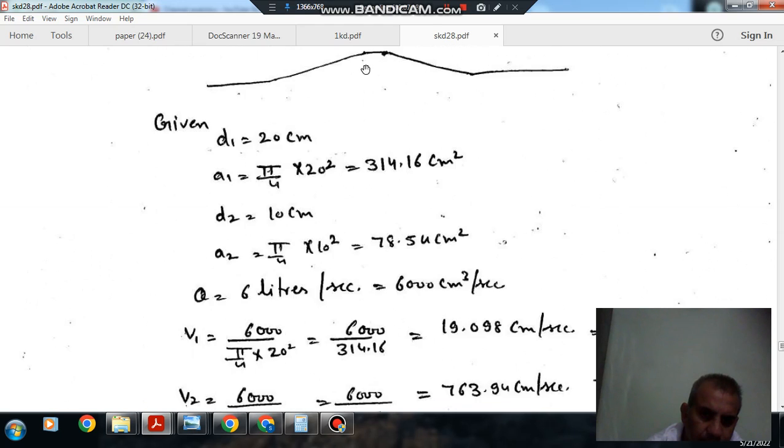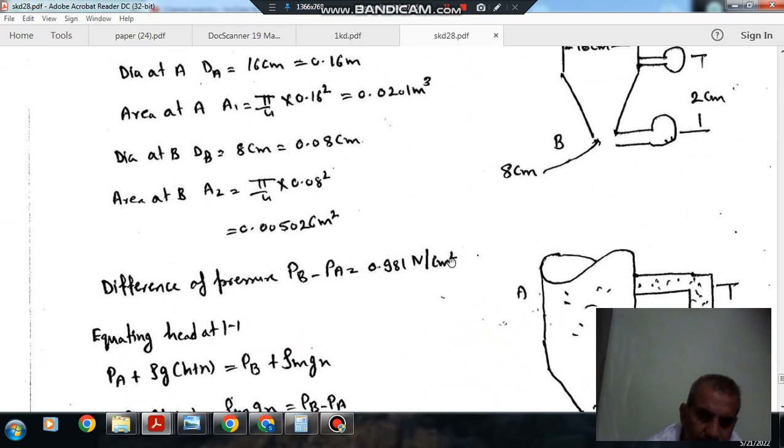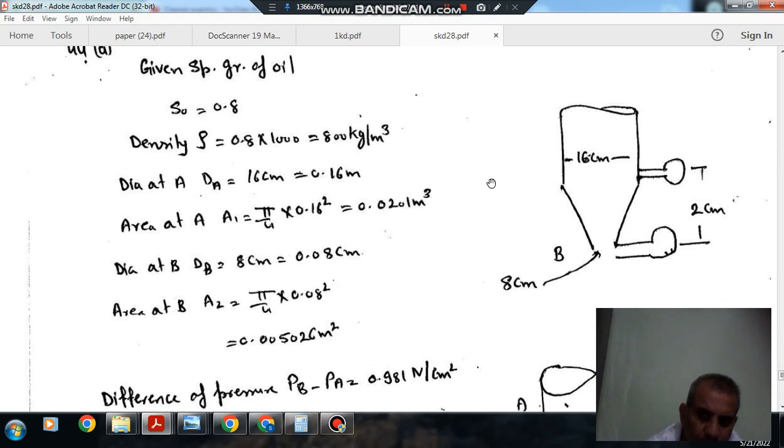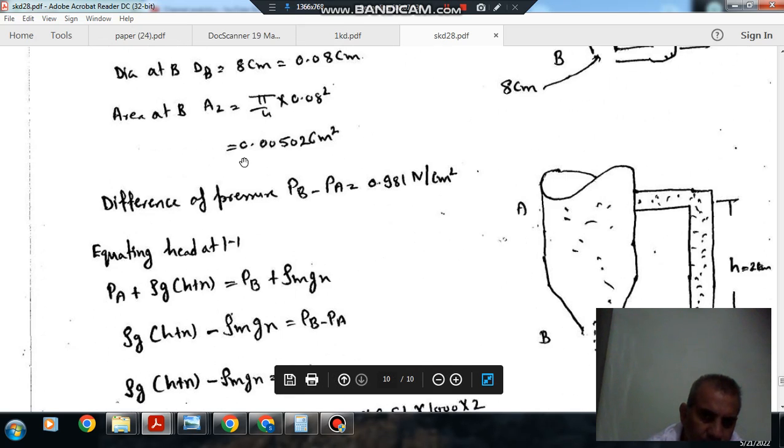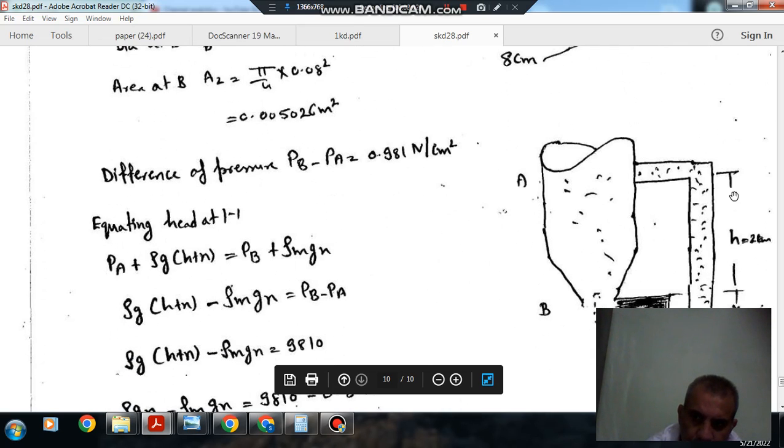Here it is given that the pressure difference at B and A is 0.981 newton per cm square or 9810 newton per meter square. The specific gravity of the liquid is 0.8. Diameter is 16 cm, so 0.16 m, so area is 0.0201 meter square. Here diameter is 0.08 m, so area is 0.00503 meter square. The height H is given as 2 meters.